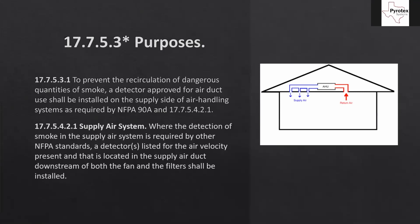The purpose of duct detectors is to prevent the recirculation of dangerous quantities of smoke. A detector approved for air duct use shall be installed on the supply side of an air handling system as required by NFPA 90A. Per section 17.7.5.4.2.1: when detection of smoke in the supply air system is required by other NFPA standards, a detector listed for the air velocity present, located in the supply air duct downstream of both the fan and the filter, shall be installed. This is basically all the 72 tells us.